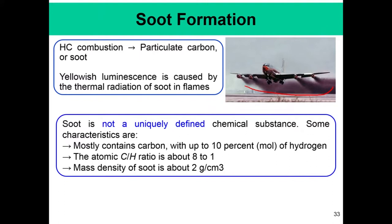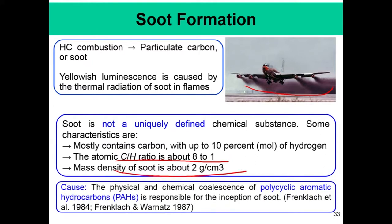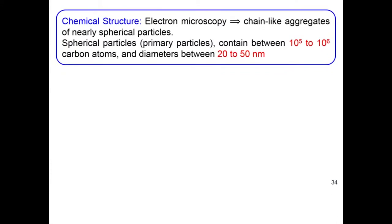Soot is not a uniquely defined chemical substance. It is mainly composed of carbon, but also contains hydrogen, and the atomic C to H ratio is about 80 to 1. The mass density of soot is about 2 grams per cubic centimeter. Soot is an agglomeration of large numbers of small carbon particles, which are composed of several thousands of carbon atoms with layered structures. The mechanism and structure of soot formation is an active research area in combustion. These chain-like aggregates of spherical particles contain several thousands to hundreds of thousands of carbon atoms, with diameters from 20 to 50 nanometers.